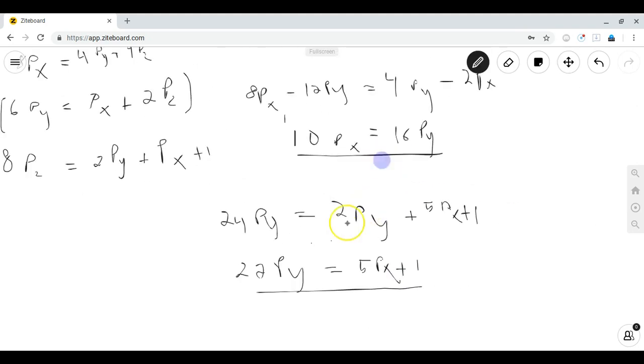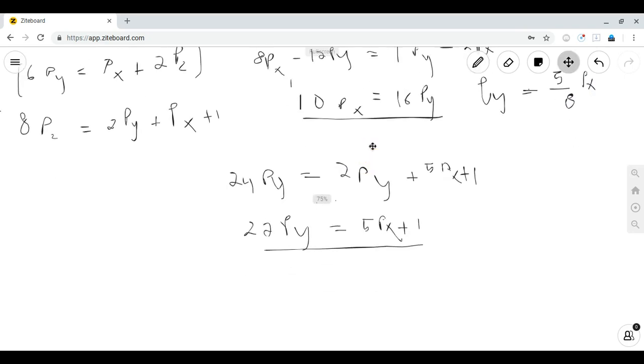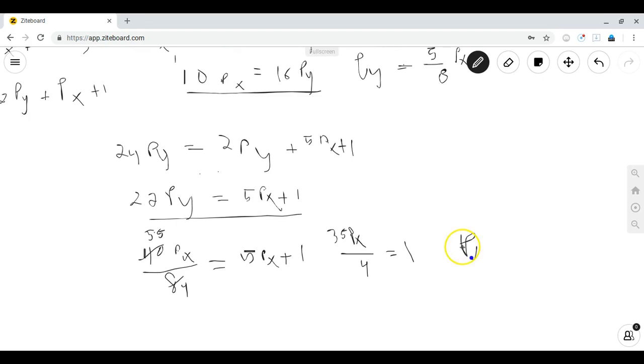Now that we have two equations and two variables, we can just substitute for P(Y). If you divide both sides by sixteen, you'll get P(Y) is equal to five-eighths P(X) by the first equation. And if you substitute this in, then we see 110P(X) divided by eight is equal to 5P(X) plus one. This is equal to 55 over four. And if you subtract 5P(X) from both sides, then you'll get that 35P(X) over four is equal to one. Solving for P(X), we see P(X) is equal to four over 35.